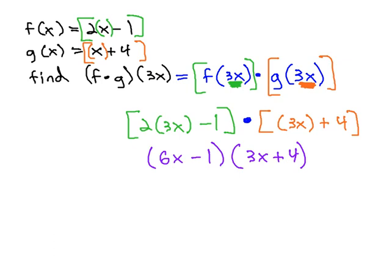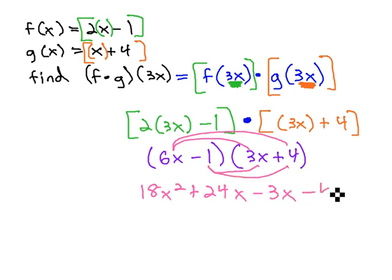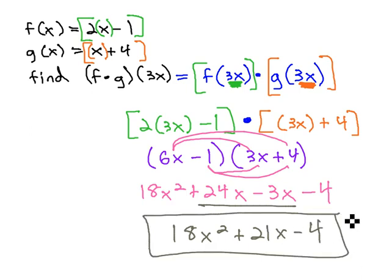And we've multiplied things like this out before. It's just a little bit of FOIL. 6x times 3x is 18x². 6x times 4 is 24x. Negative 1 times 3x is negative 3x. And negative 1 times 4 is negative 4.